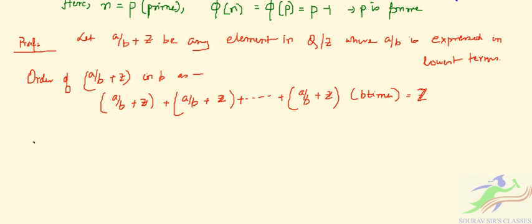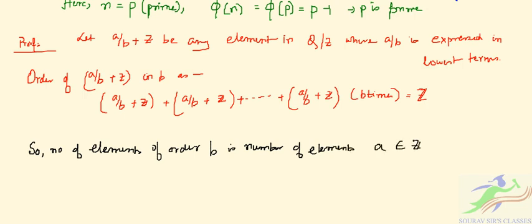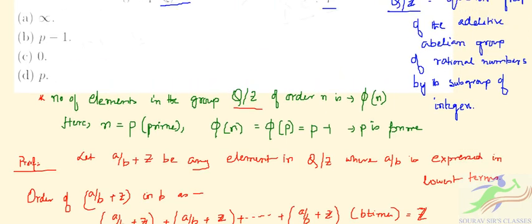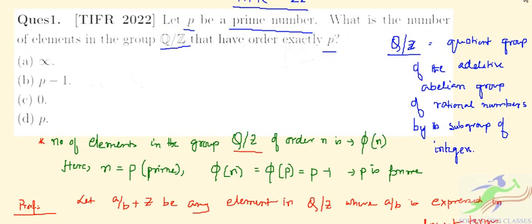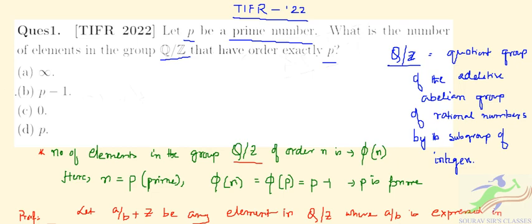So here we can write: the number of elements of order B is the number of elements A, which is an element of the integers such that GCD of A and B equals 1. That is nothing but phi of n. So for question number 1, our correct option is option B, that is P minus 1.